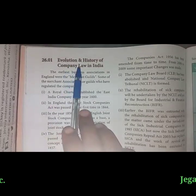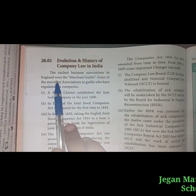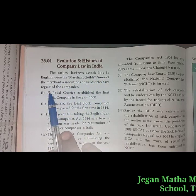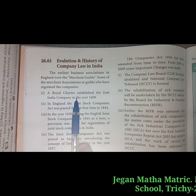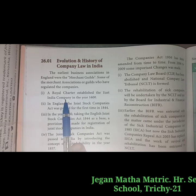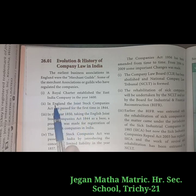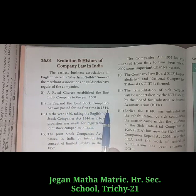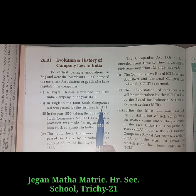Next topic: Evaluation and History of Company Law in India. The earliest business associations in England were the merchant guilds. Some of these merchant associations or guilds regulated the companies. First, a royal charter established the East India Company in the year 1600. Then, in England, the Joint Stock Companies Act was passed for the first time in 1844.